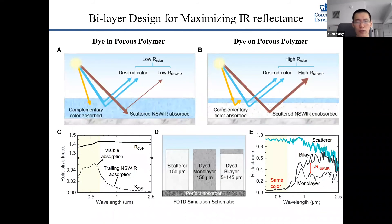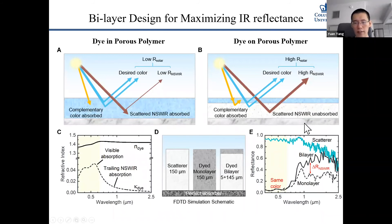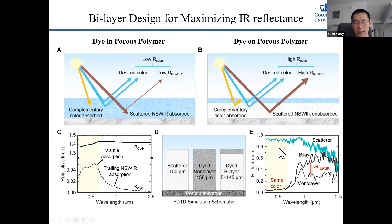The method we use is called a bi-layer design. Unlike a conventional single-layer paint, we use two layers: a top layer that absorbs visible light to give you the color you want, and a bottom layer of the porous PVDF I described earlier. This bottom layer strongly scatters and reflects near infrared light, so there is not much absorption of near infrared — it is fully reflected to achieve high solar reflectance. Simulations confirm that this bi-layer structure increases reflectance in the infrared part.